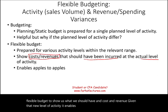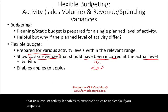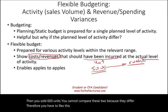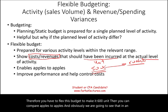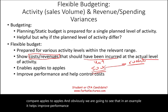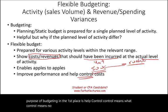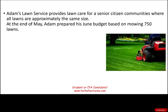It enables us to compare apples to apples. If you prepare a budget with 500 units and then sold 600 units, you cannot compare these two because they differ. Therefore, you have to flex the budget to make it 600 units, then compare apples to apples. It helps improve performance and control cost, which is the whole purpose of budgeting — to know what's happening, plan ahead, and not overspend or underspend.